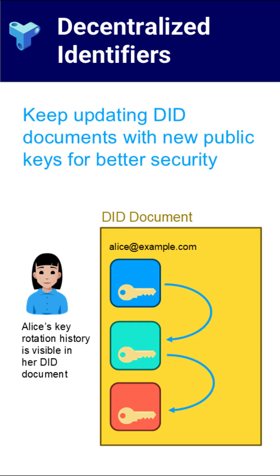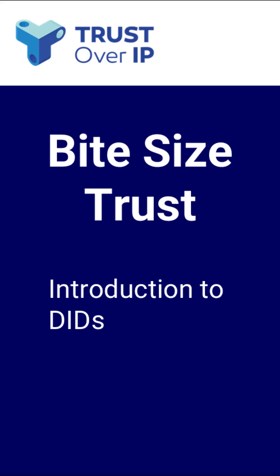With DIDs, if a key is stolen, it can be replaced, and anyone verifying the identity can immediately see the update. By solving the problems of key rotation, tracking key history, and removing the need for a central authority, DIDs create a new way to manage trust in a decentralized world.